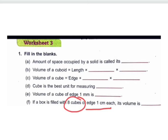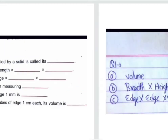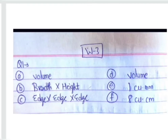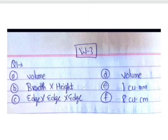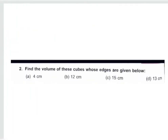Volume of 1 cube is 1 cubic centimeter, and with 8 cubes the answer is 8 cubic centimeters. So the answers for question one are: volume, length × breadth × height, edge × edge × edge, 1 cubic millimeter, and 8 cubic centimeters. Let's move to question number two.